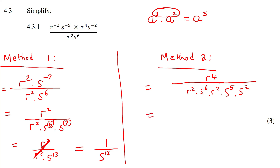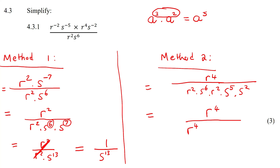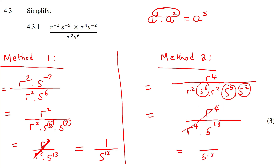Now at the top I've got r^4; at the bottom I've got r there and r there, so add those exponents — that becomes r to the 4. For the s's I've got three of them: 6 plus 5 plus 2 equals 13. Now the r^4 on top and r^4 on the bottom cancel out, and we're just left with 1 over s^13 — same answer. So here are two slightly different methods.